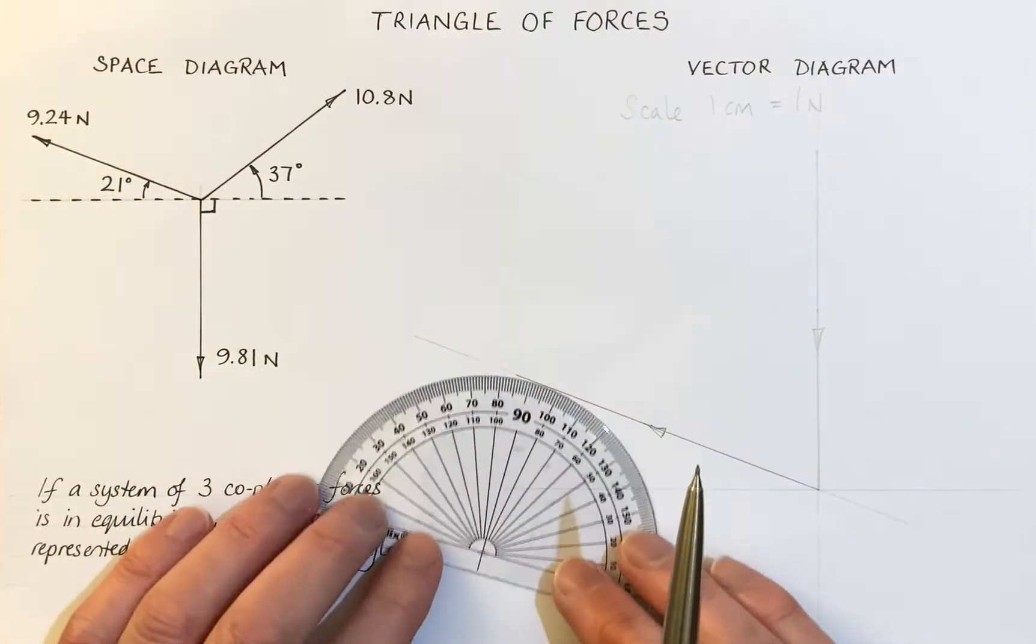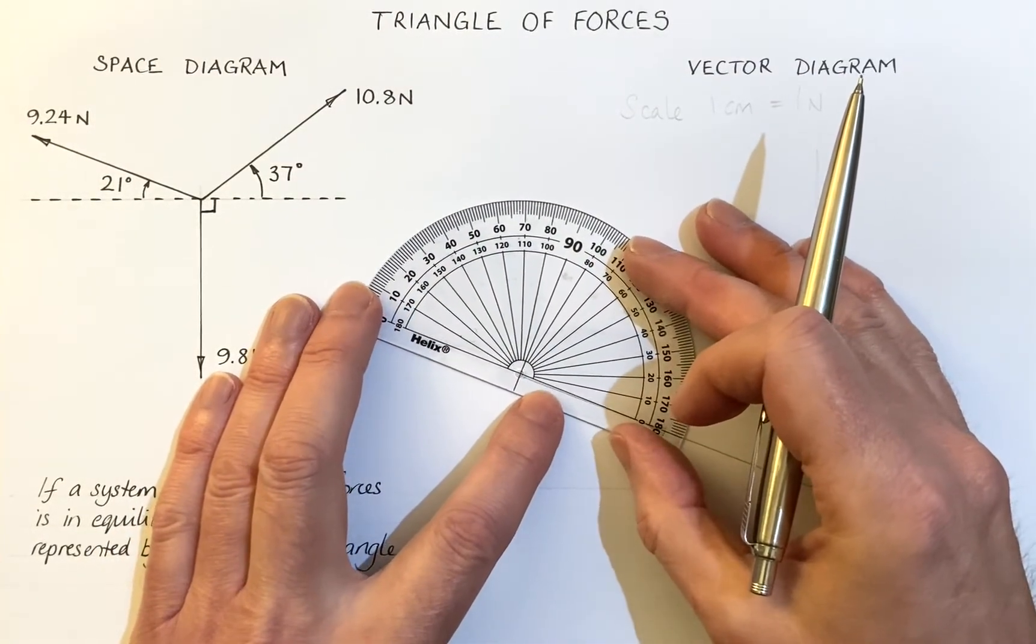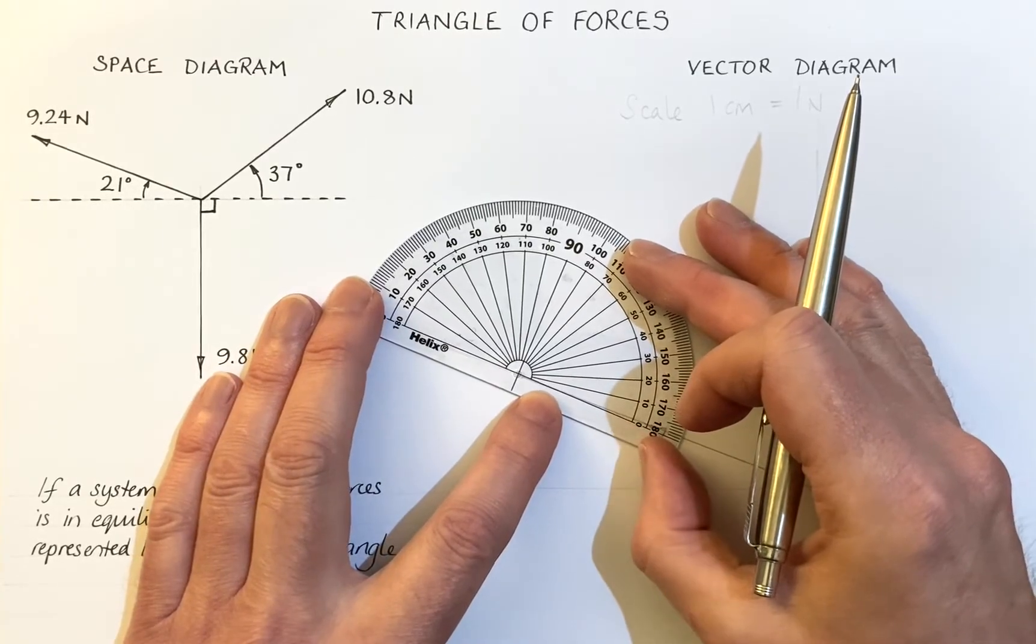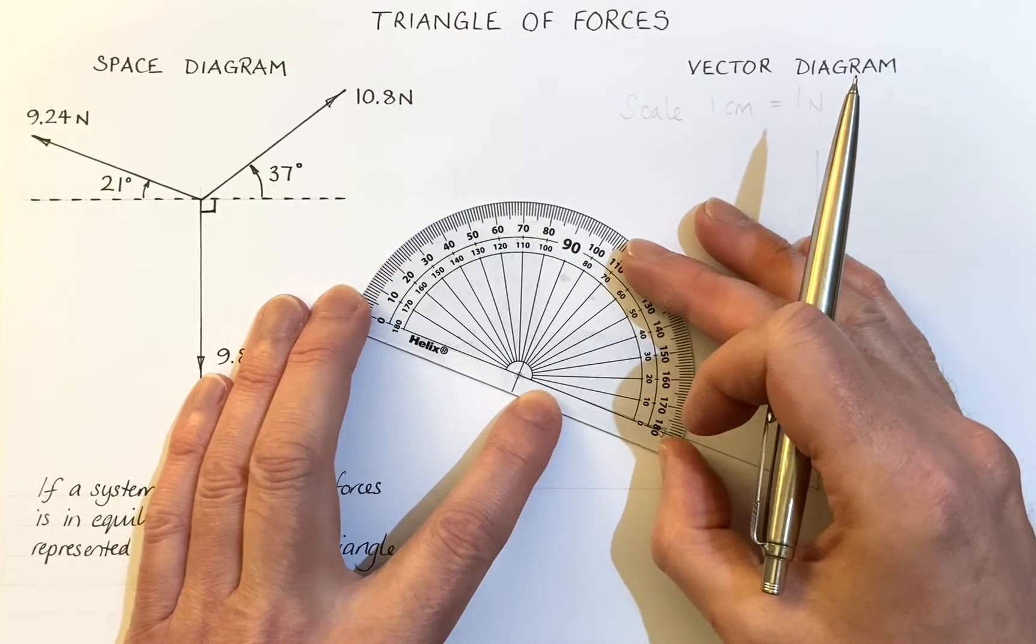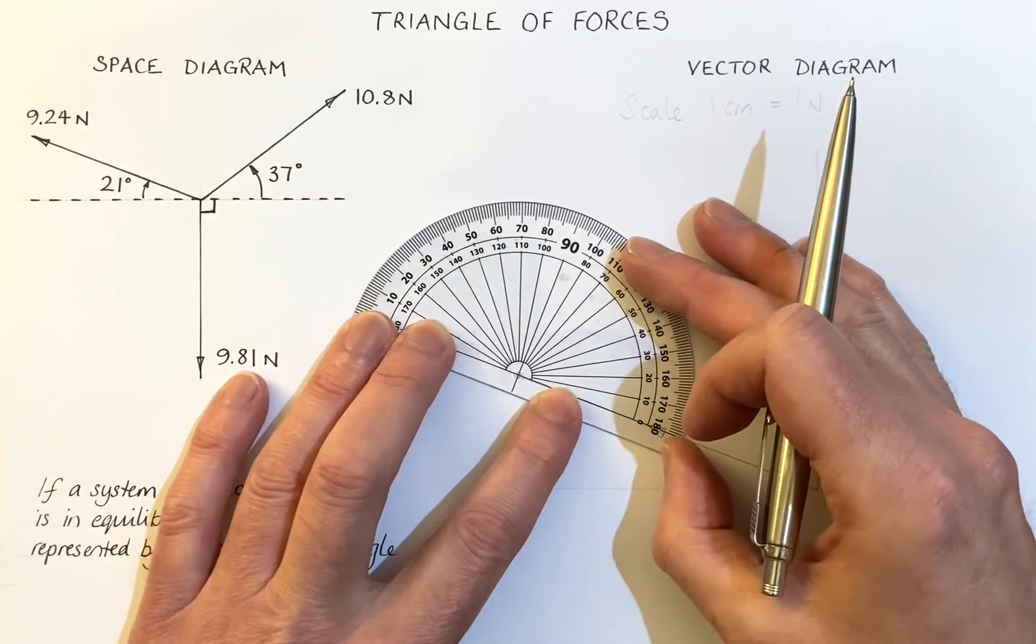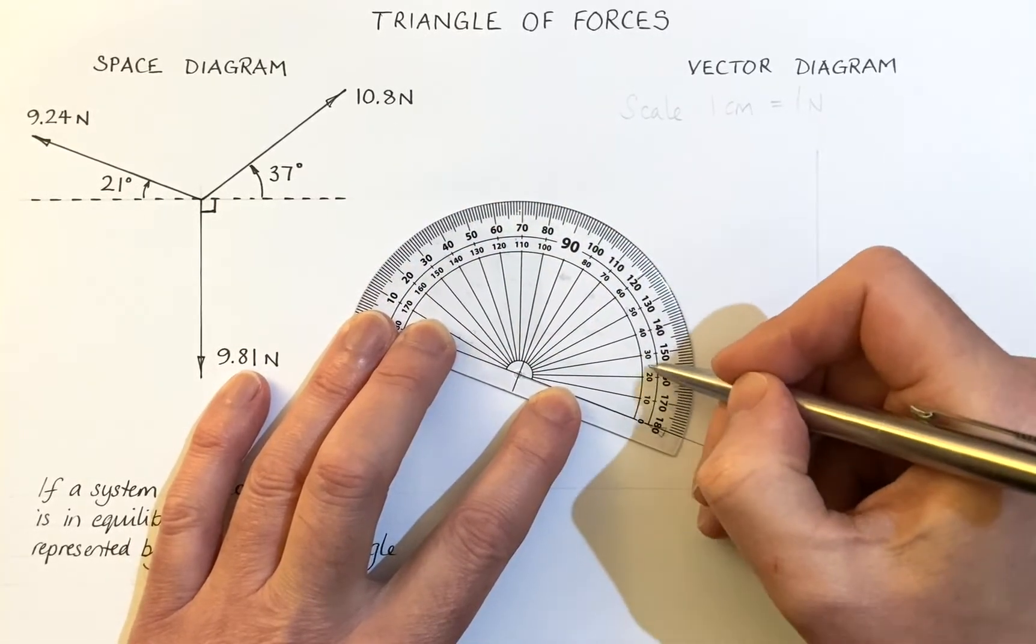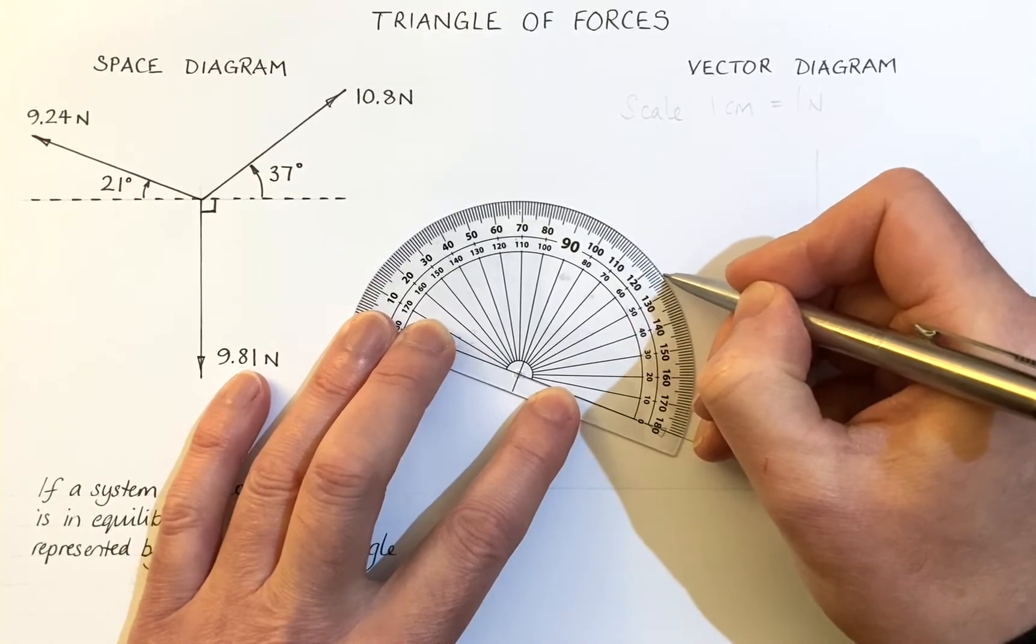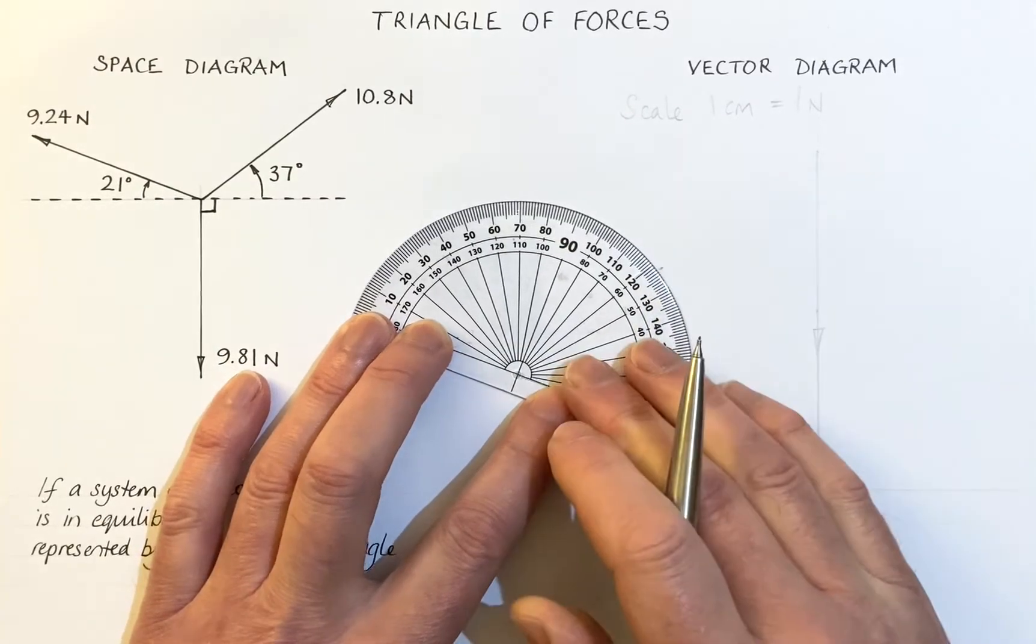So I can put my protractor on the end of this line here, making sure I get the crosshairs on the end of the vector. There we go. Line up. That's zero. There. And that's going to be 58 degrees round from here. So that's 50 degrees, 55, six, seven, eight. 58 degrees there.